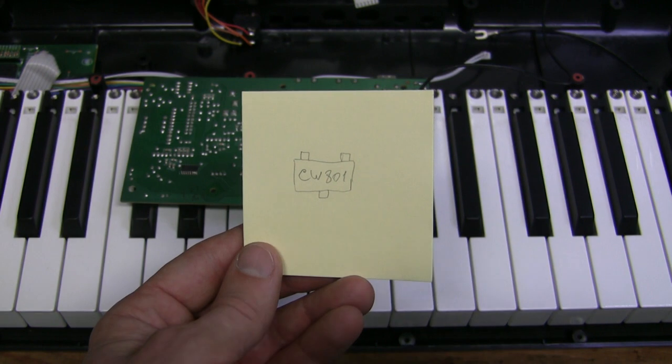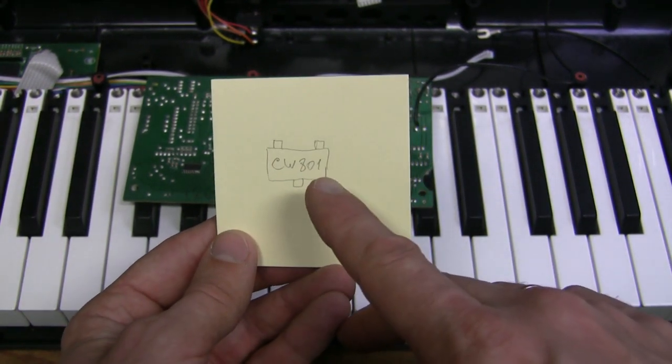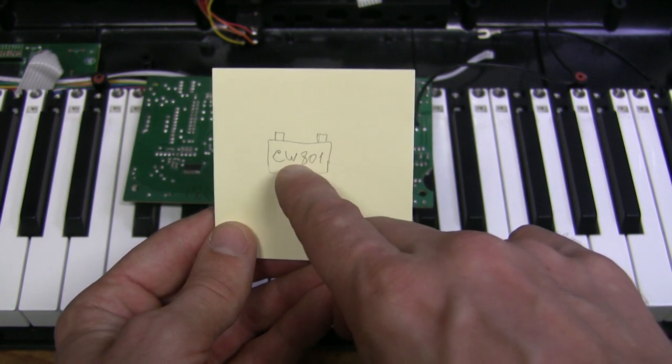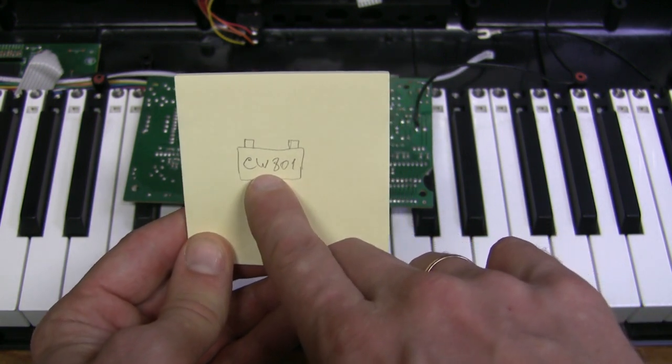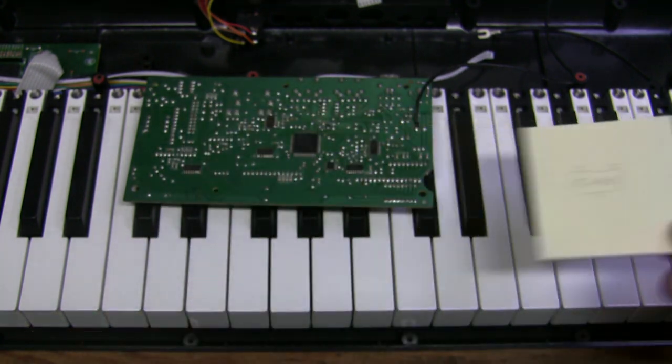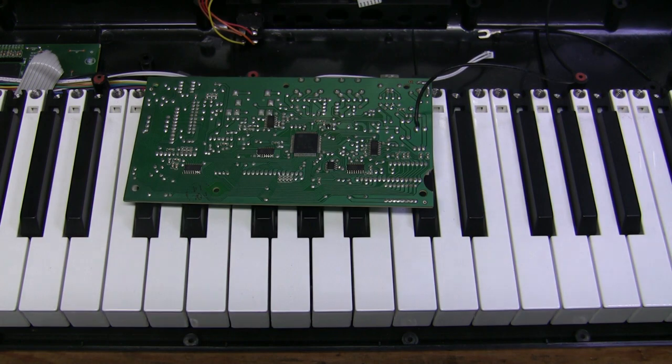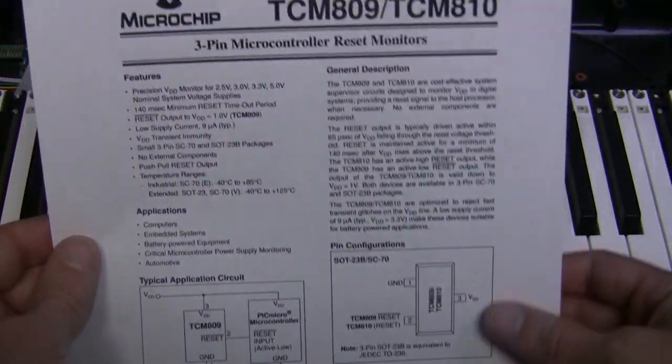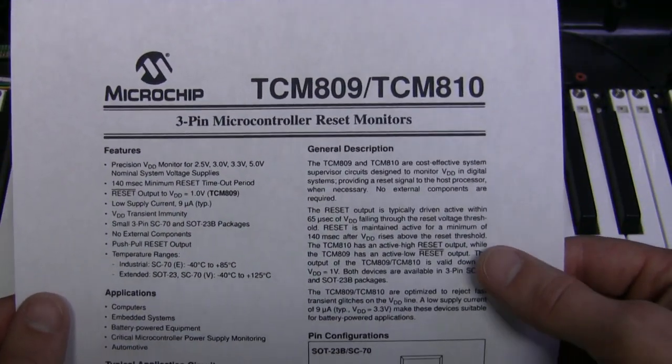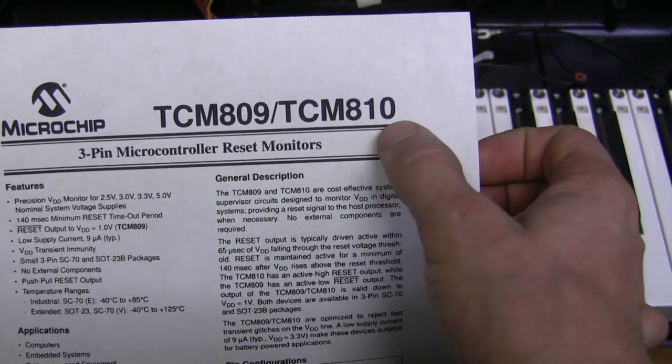Before we measure anything we need to get some idea what to expect. So I looked at this chip under magnifying glass and it's marked CW801. I couldn't find datasheet for exactly this chip but I found an equivalent from Microchip which is TCM809 or 810.